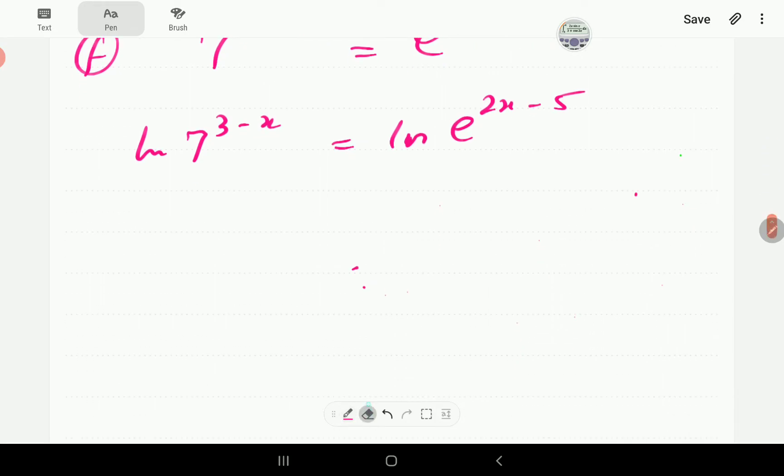So ln here, e^(2x-5). Then bring down the powers on both sides. This side is going to have 3 minus x, ln 7. This side is going to have 2x minus 5, ln e.